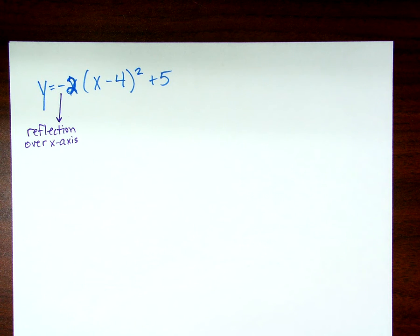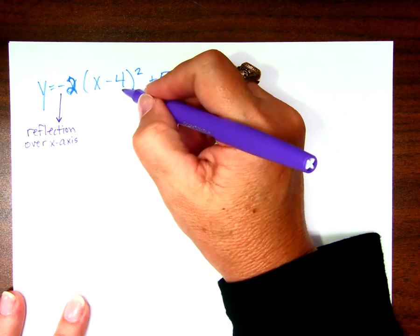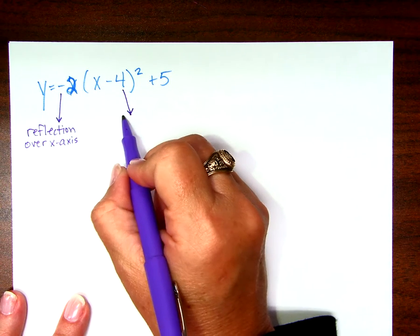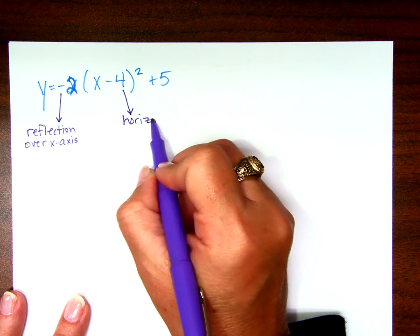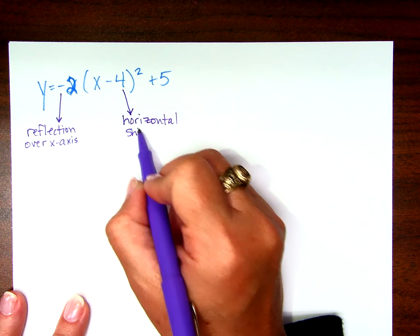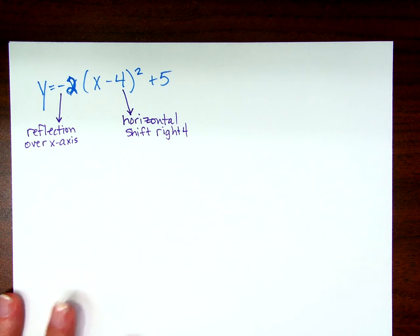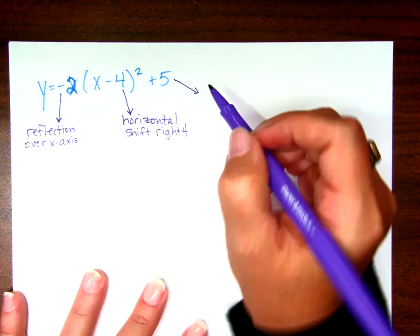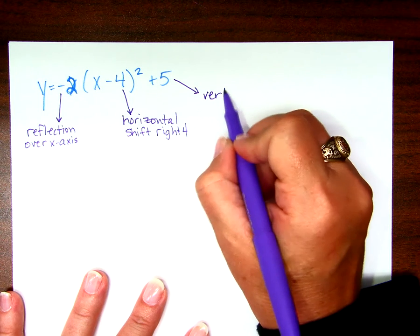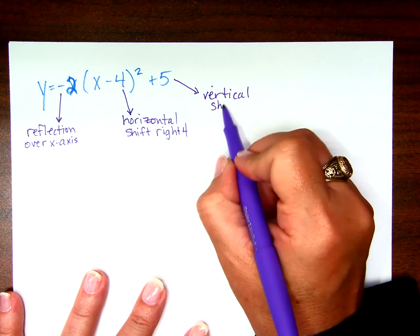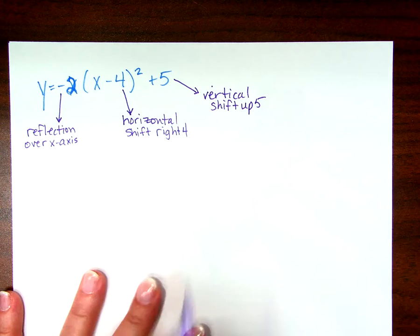And move to the right four. Does anyone agree with her? It's opposite, right. So this four causes a what? Horizontal shift right four. Anything else? It moves up five. How do you know that? Plus five. So what's the correct math vocabulary for that? Vertical shift up five.